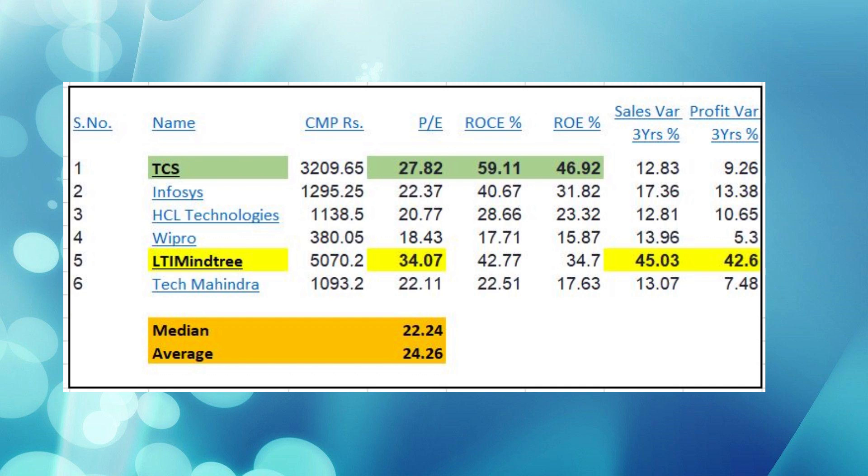There are a couple of things we can do. First, compare it to the industry — how does TCS compare to other similar IT companies? TCS is way bigger than any other Indian IT company, with a market cap of over 11 lakh crore rupees. Taking the top six Indian IT companies with market caps over 1 lakh crore rupees, their median P/E ratio is 22.24 and average P/E ratio is 24.26. Based on this, TCS is the second most expensive stock after L&T Mindtree.